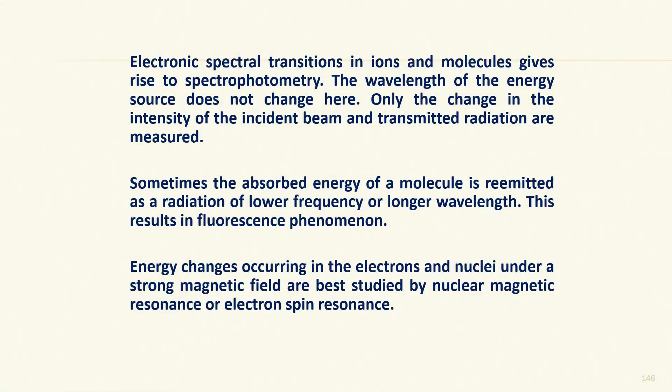Electronic spectral transitions in ions and molecules give rise to spectrophotometry. The wavelength of the energy source does not change here — only the change in intensity of the incident beam and transmitted beam are measured. We plot the difference between transmitted energy and incident energy versus wavelength. A small peak is obtained corresponding to electronic transitions, but every electronic transition is also associated with vibrational and rotational energy levels.